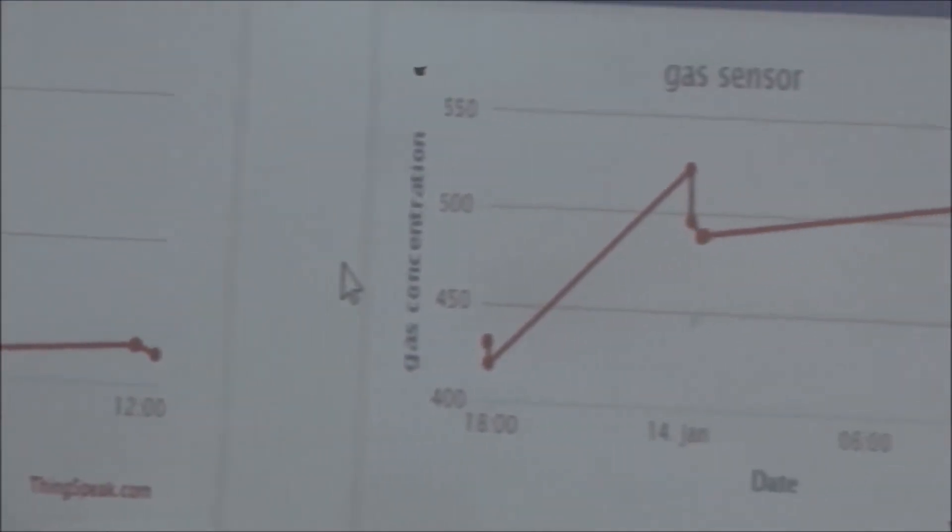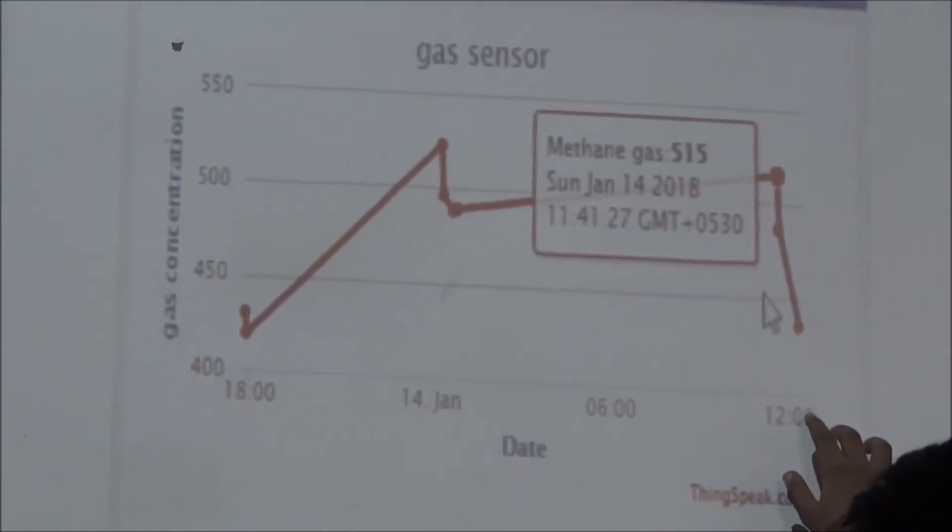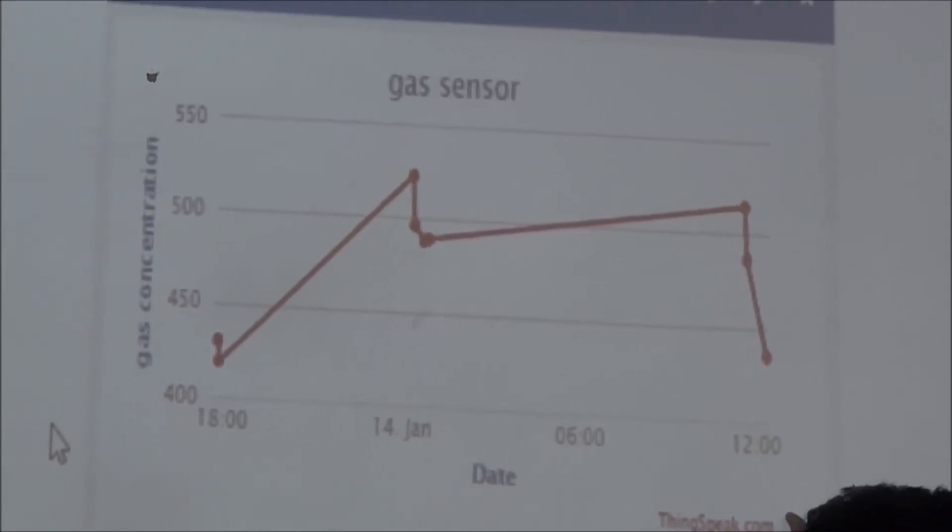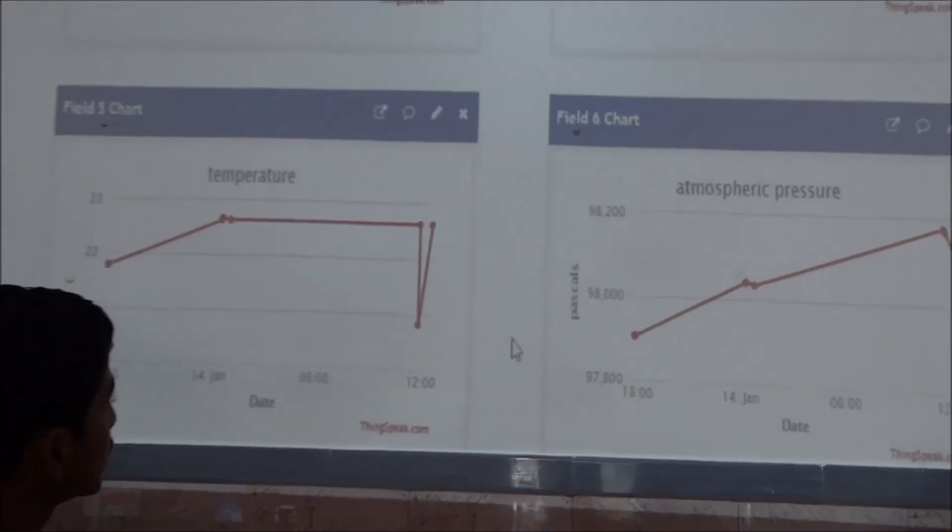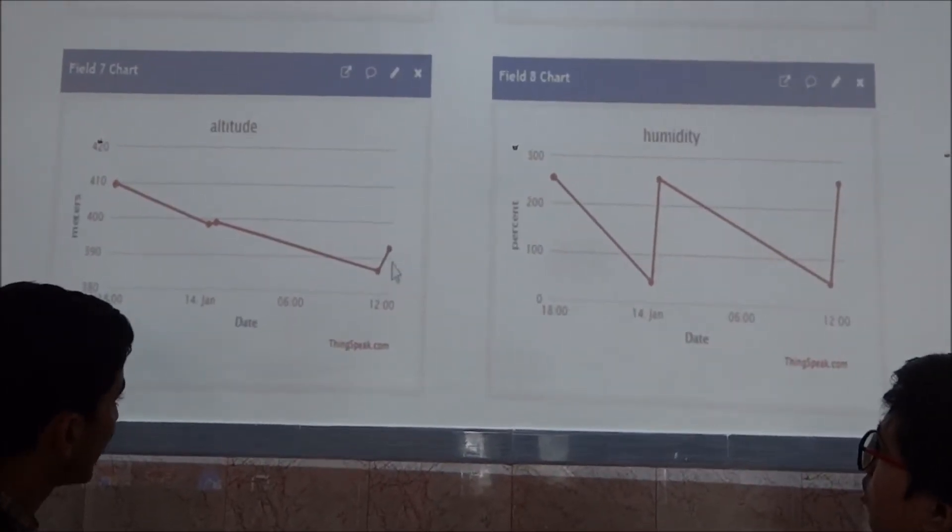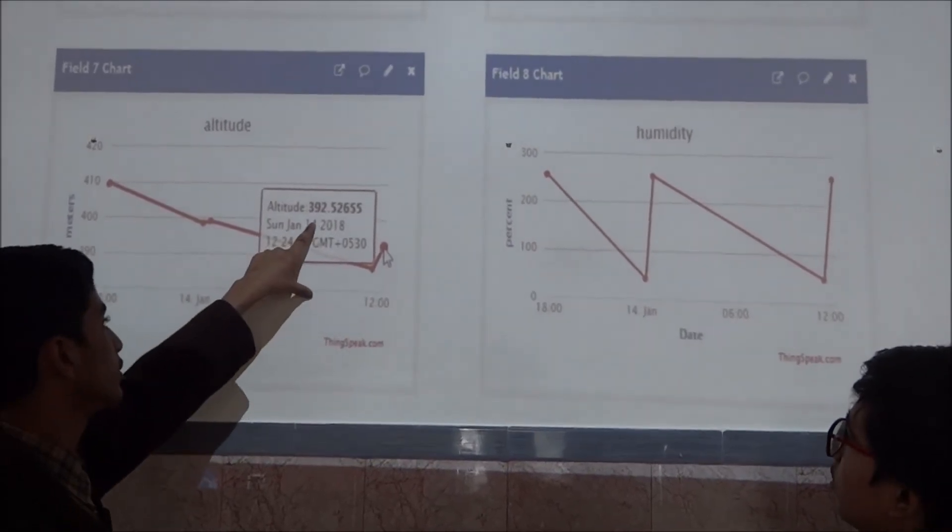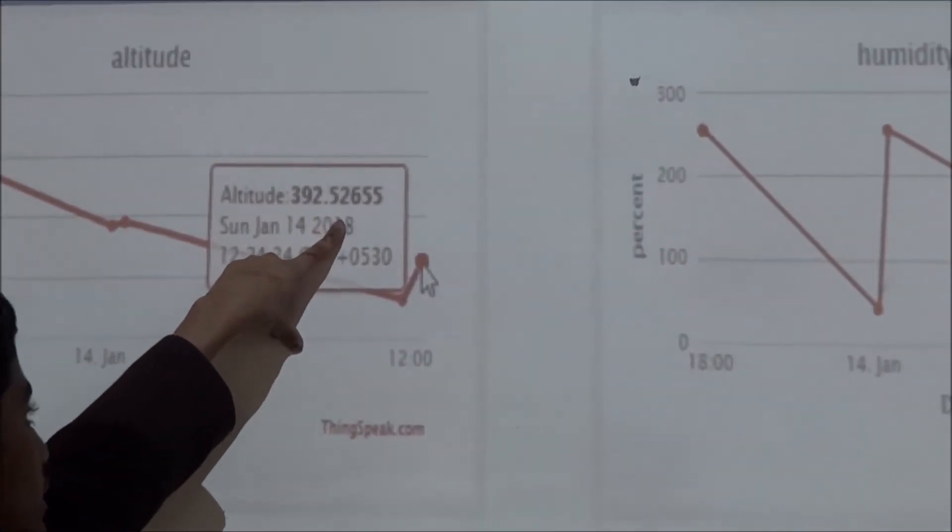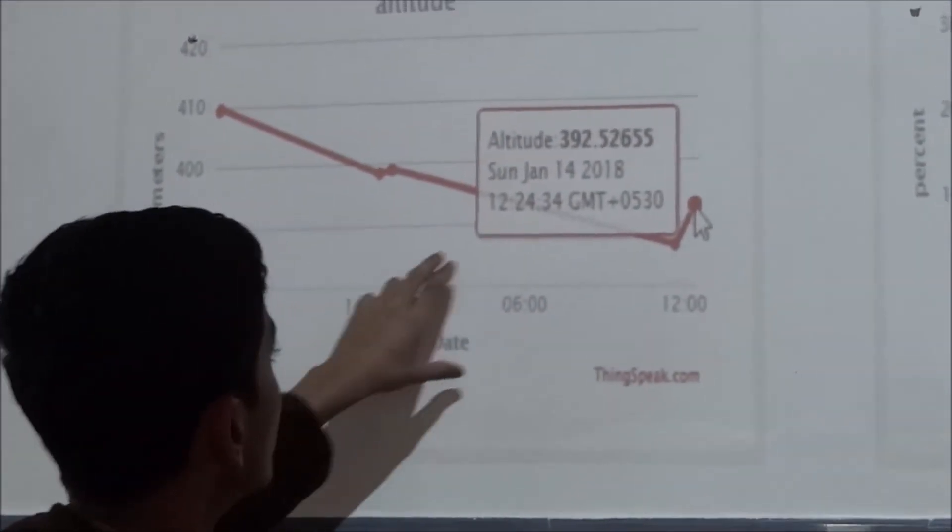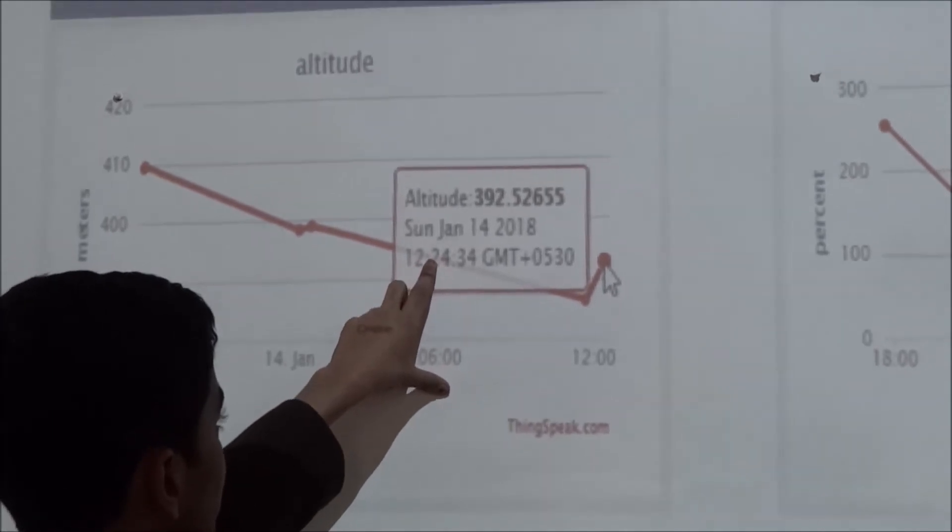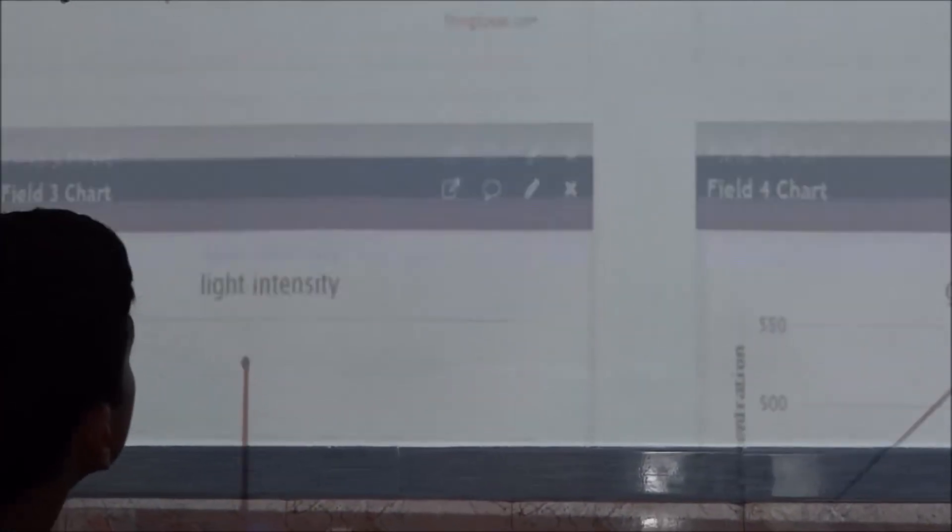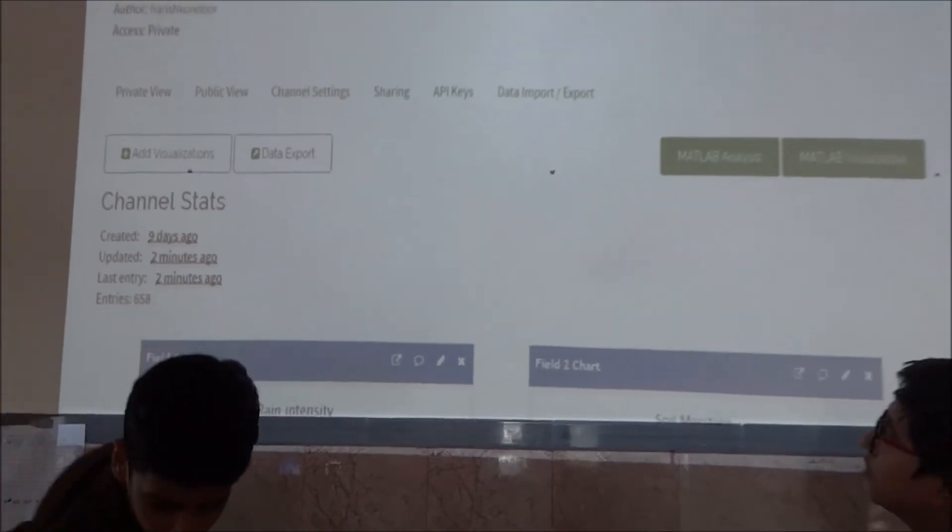With the chart 4 that is gas sensor, it was just uploaded, updated one minute ago and it also shows that gas sensor is also working. We also have temperature, atmospheric pressure, altitude and humidity. They all work the same. And you can see that altitude is 392.52 meters. This shows that we are above 392.5 meter above the sea level. Here we are also showing the real-time date and time in the GMT. So, this is about our ThingSpeak.